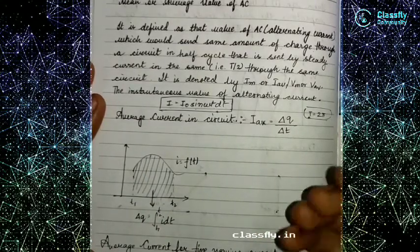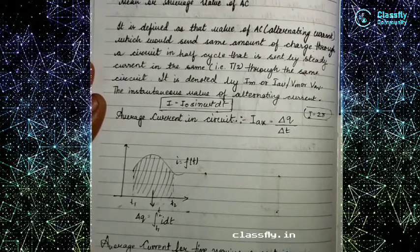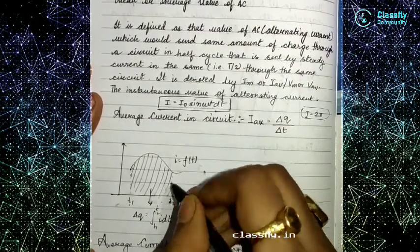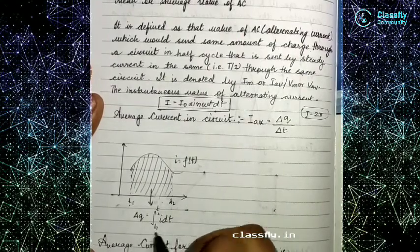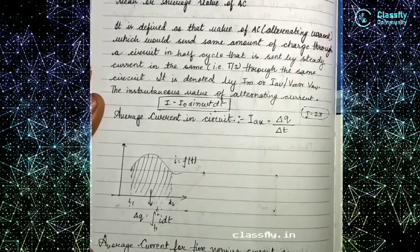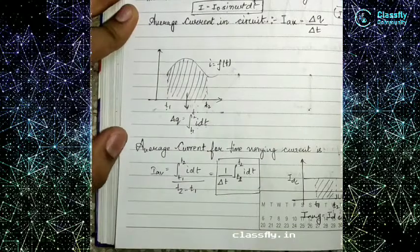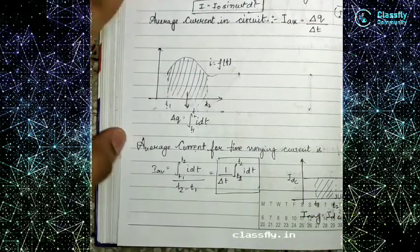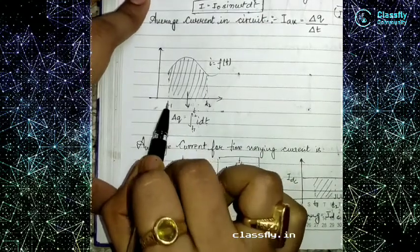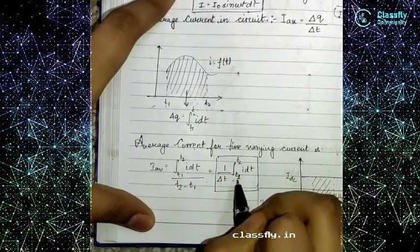The average current means ΔQ, that is the change in charges divided by the change in time. If we think of a curve from time t₁ to t₂, the area under the curve gives us ΔQ = ∫(t₁ to t₂) I dt. This is an integration since current is a function of time. So the average current for a time-varying current will be I_av = [∫(t₁ to t₂) I dt] / (t₂ - t₁), where (t₂ - t₁) is Δt.